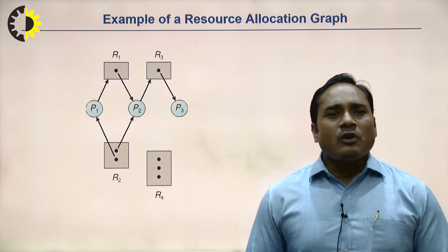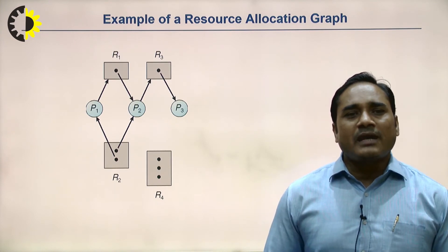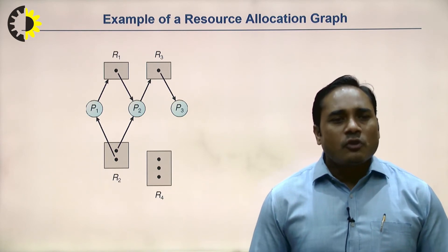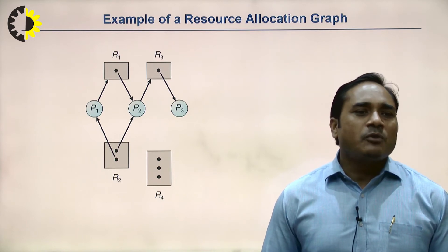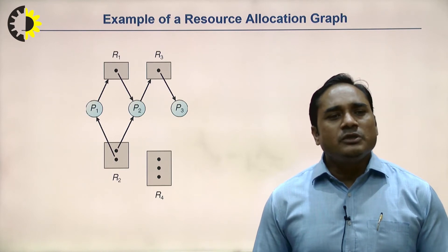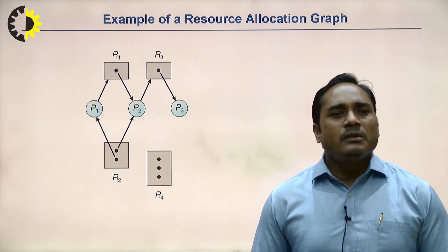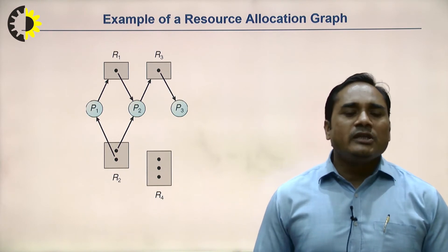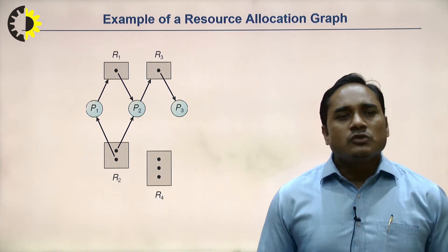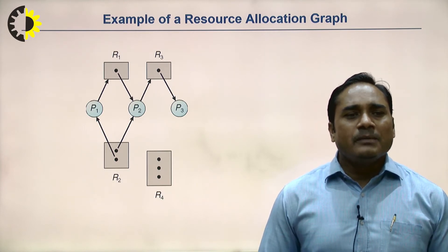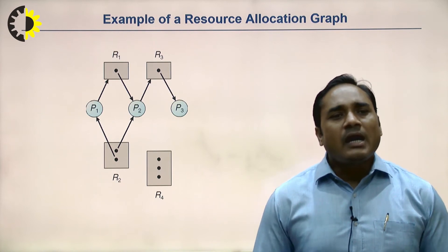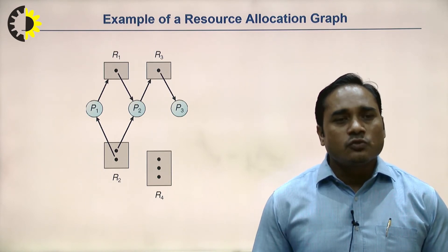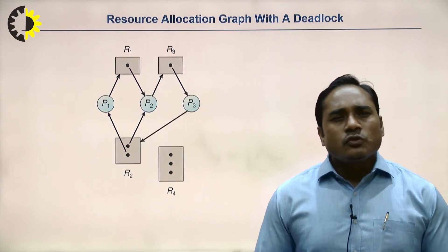In the example resource allocation graph, process P1 is holding resource R2 and requesting resource R1. Process P2 is holding resource R1 and requesting resource R3. Process P3 is holding resource R3 with no request to R4. This diagram shows how processes P1, P2, and P3 are connected through holding and requesting resources.